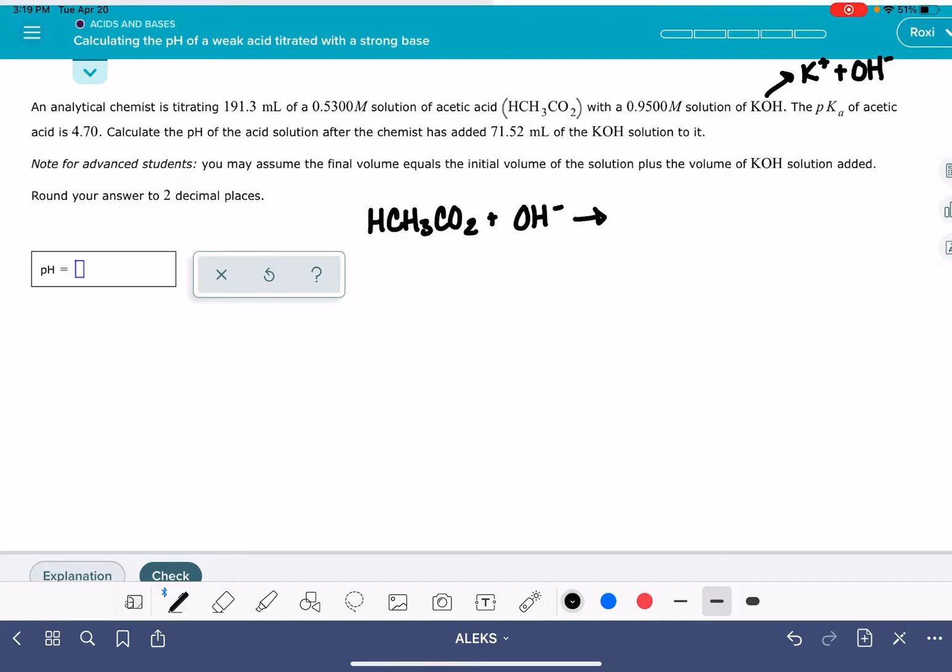First thing that I'm going to be doing here is setting up a chemical reaction so that I can make an ICE table. My acid is going to donate one of its hydrogen ions. That's going to leave it as CH3CO2-. And the hydrogen ion is going to go over to the OH- ion to make water. And then I'm going to be making an ICE table from the information in the problem.